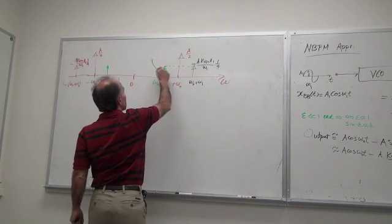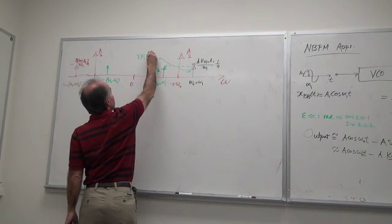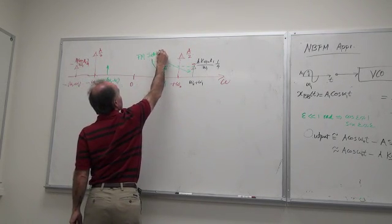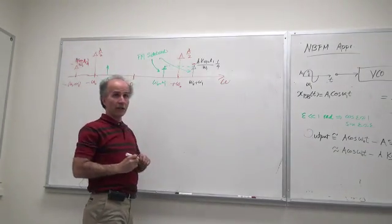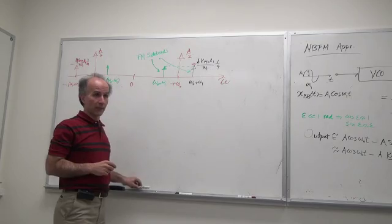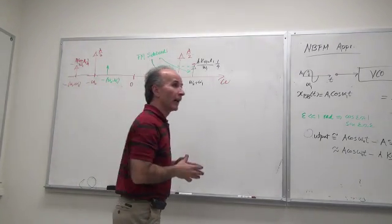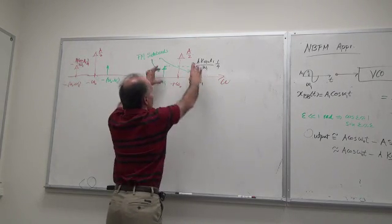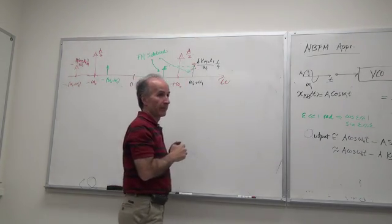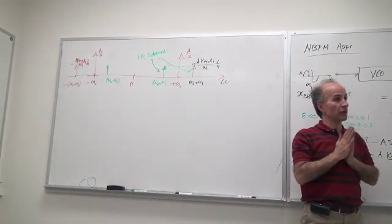Under these two conditions we end up with these nice and simple spectra here. We will call these two FM sidebands. So we see that the spectrum consists of the carrier itself plus two sidebands. These two sidebands are symmetrically located around the carrier - omega one above, omega one below - and they have the same amount. Any questions so far?